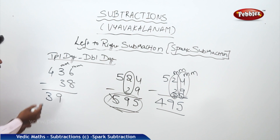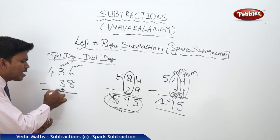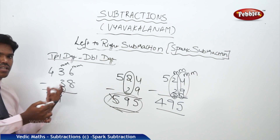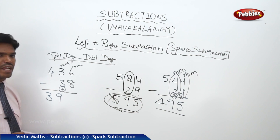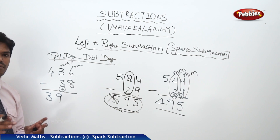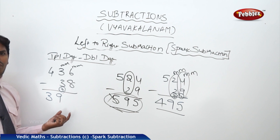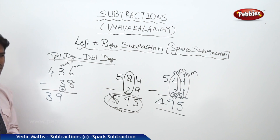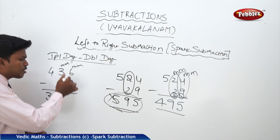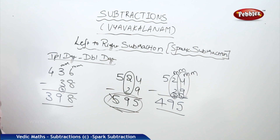Why? Because they are mismatched. So 3 plus 7 is 10. Obviously the next number is mismatched, so 10 becomes 9. You will get 9 in the middle position when the next number is mismatched. Now 6 plus 2 equals 8. So the answer is 398.